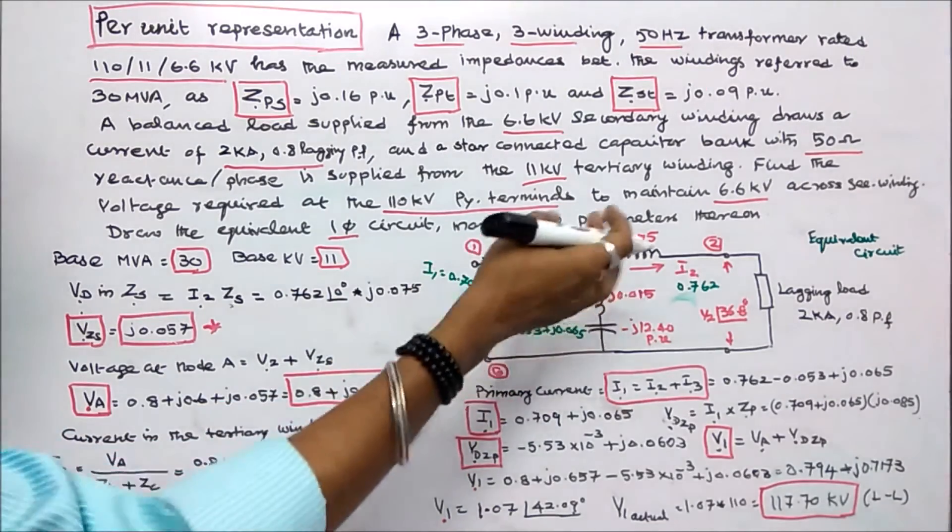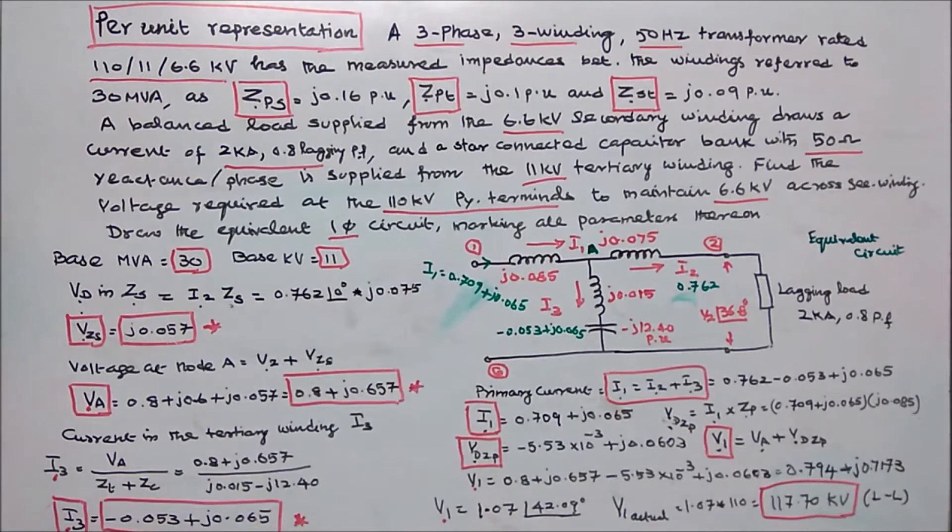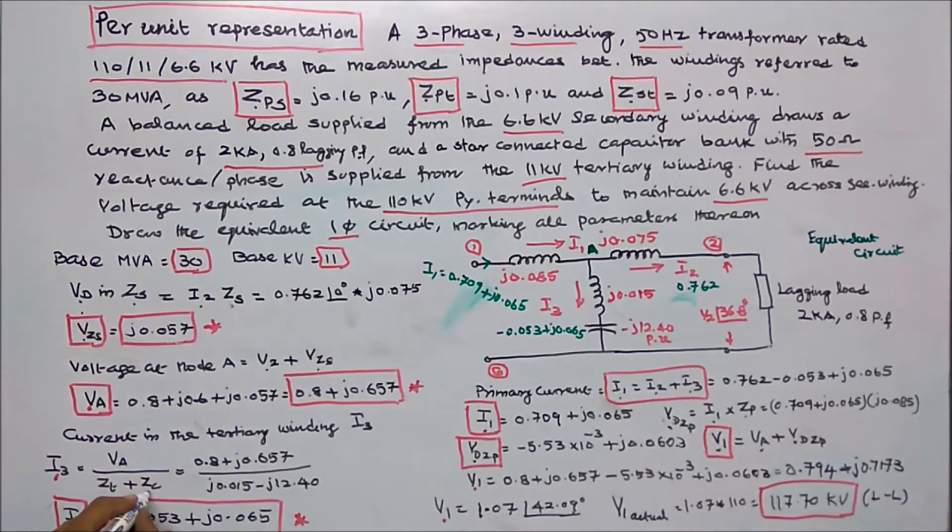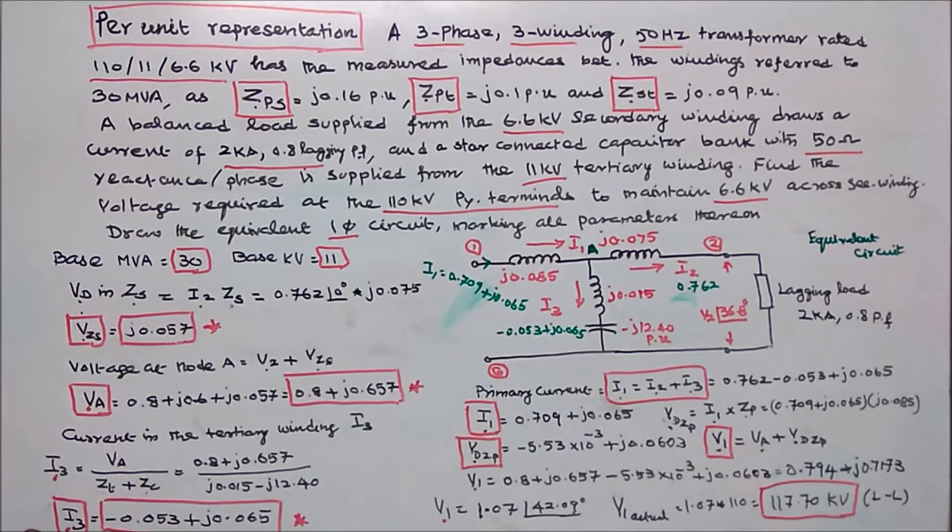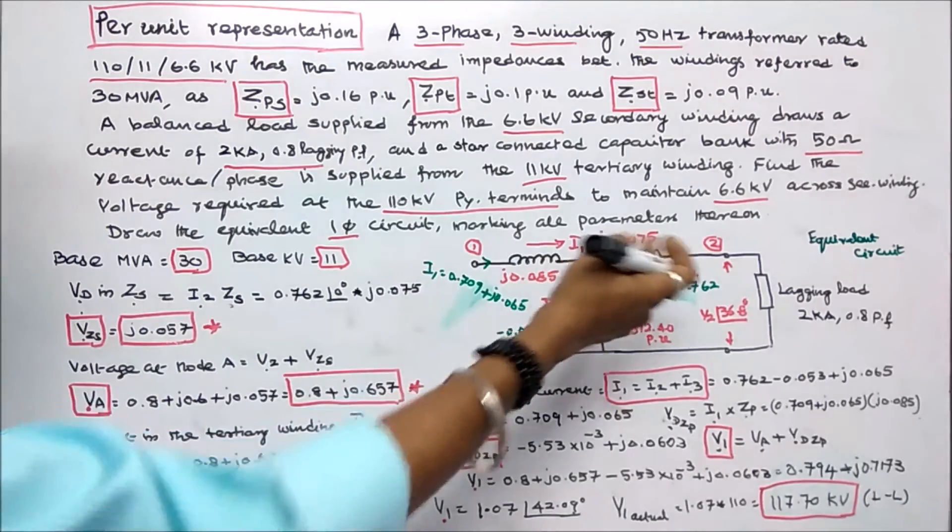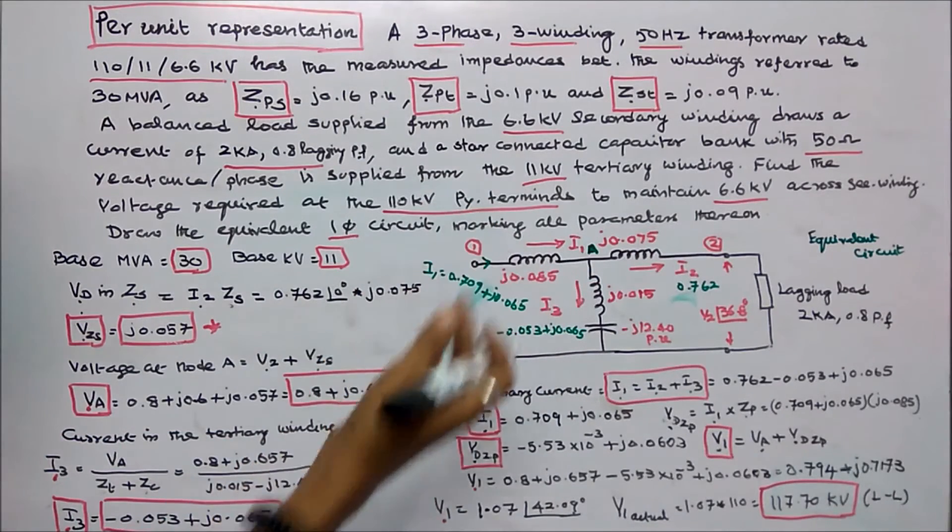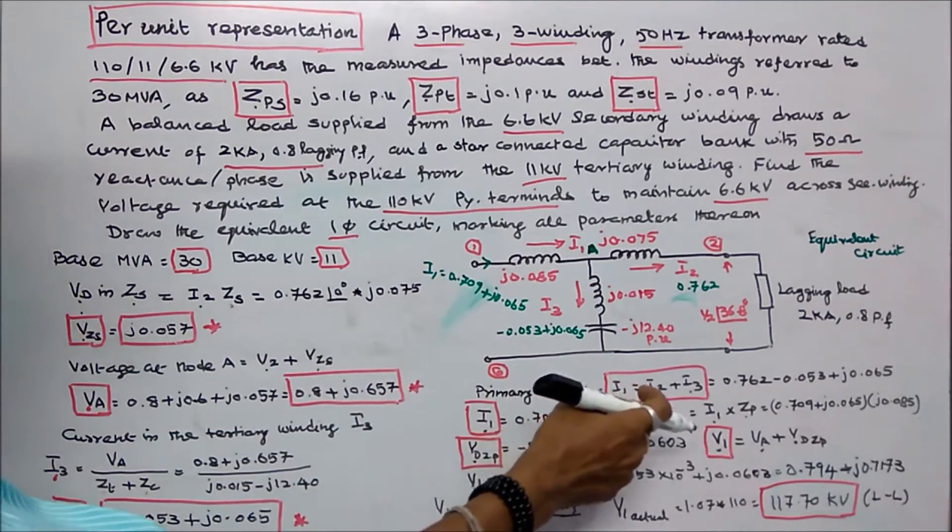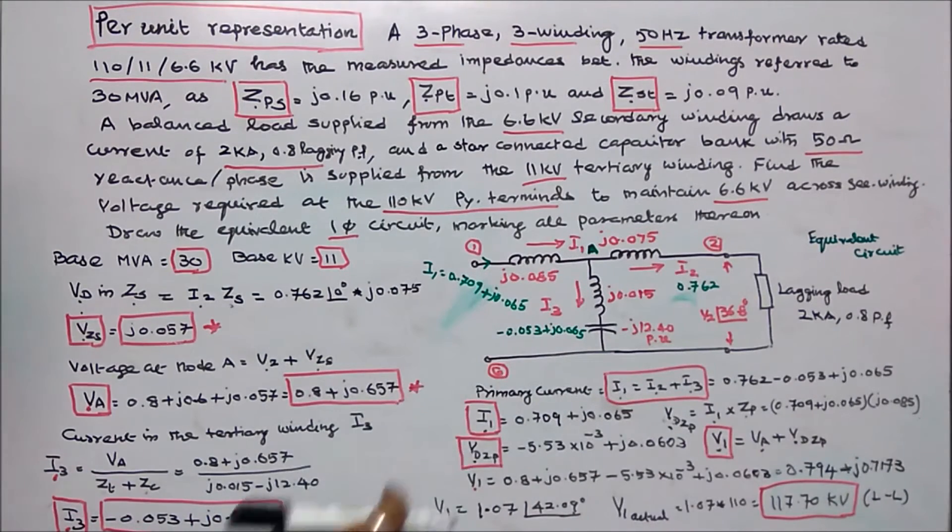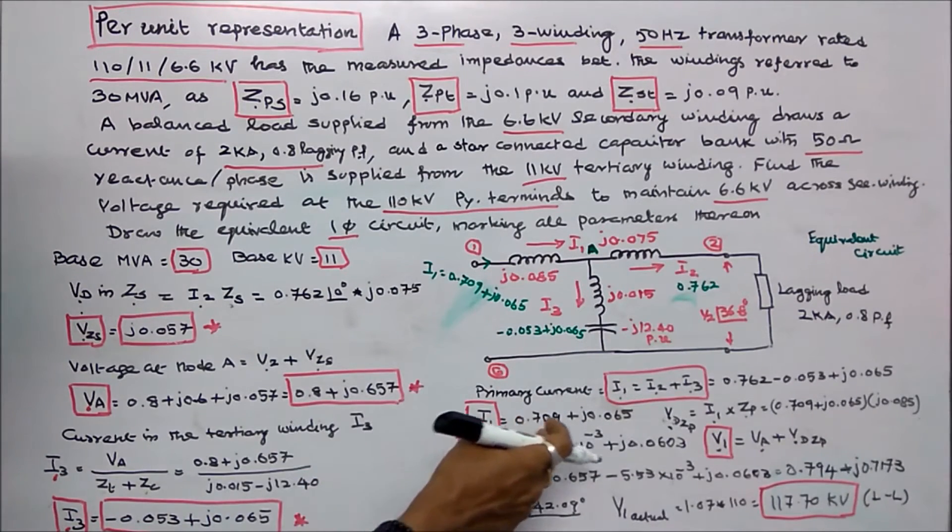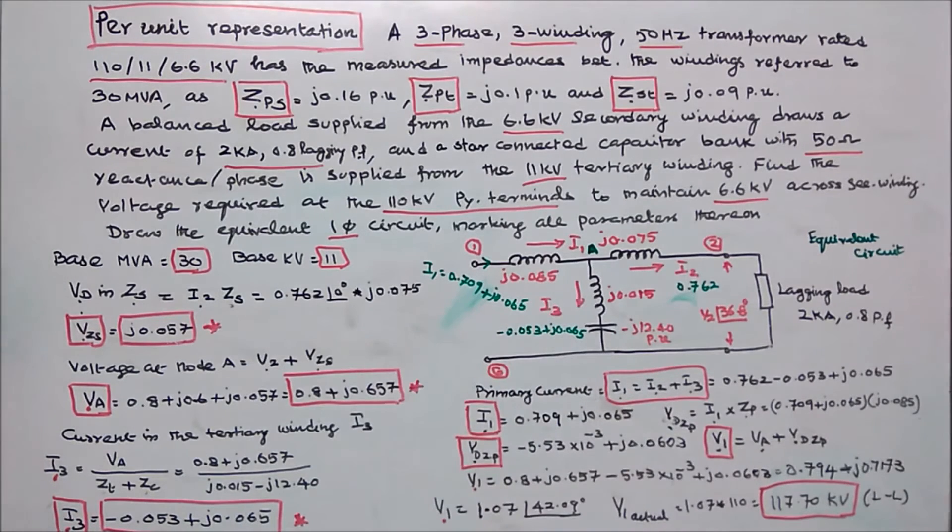Once I know the voltage I can find the current I3. I3 is equal to node voltage VA divided by this tertiary winding impedance ZT per unit plus capacitor per unit reactance. So I3 per unit is equal to minus 0.053 plus J 0.065. I know I2 and I3, I can find the primary current. I1 per unit is equal to I2 per unit plus I3 per unit. I1 is equal to 0.709 plus J 0.065.